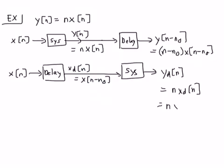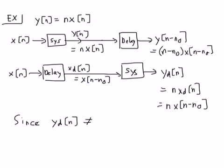In one case, running through the system then delaying gives (n - n0)·x(n - n0). In the second case, delaying first then running through gives n·x(n - n0). These are not the same, so since yd(n) ≠ y(n - n0), the system is not time invariant.